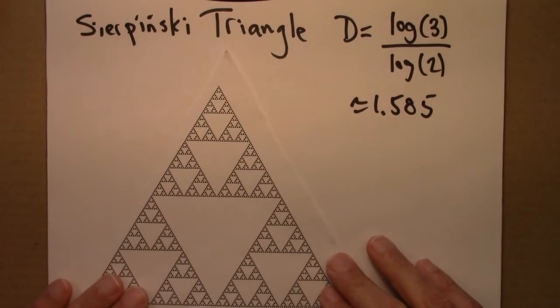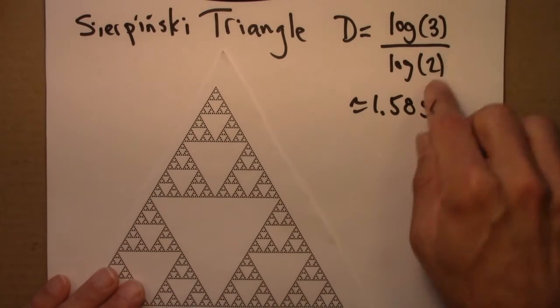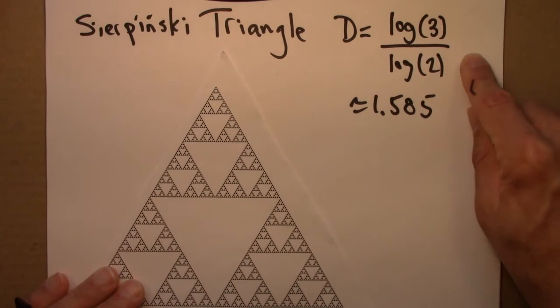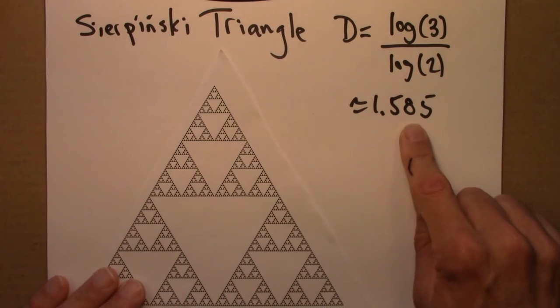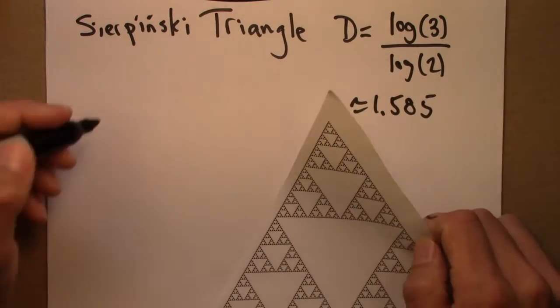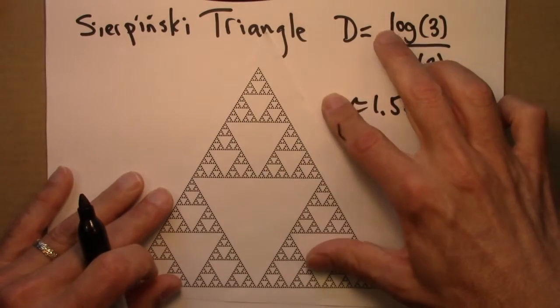The last question on the quiz concerned the Sierpinski triangle. Recall that the dimension was log 3 over log 2, which evaluates to around 1.585.